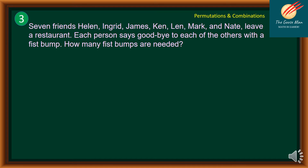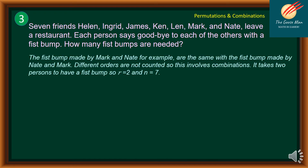Let's move on to problem number 3. Seven friends — Helen, Ingrid, James, Ken, Len, Mark, and Nate — leave a restaurant. Each person says goodbye to each of the others with a peacebomb. How many peacebombs are needed? The peacebomb made by Mark and Nate is the same as the one made by Nate and Mark — different orders are not counted. This involves combination. It takes 2 persons to make a peacebomb, so r is equal to 2 and n is equal to 7.